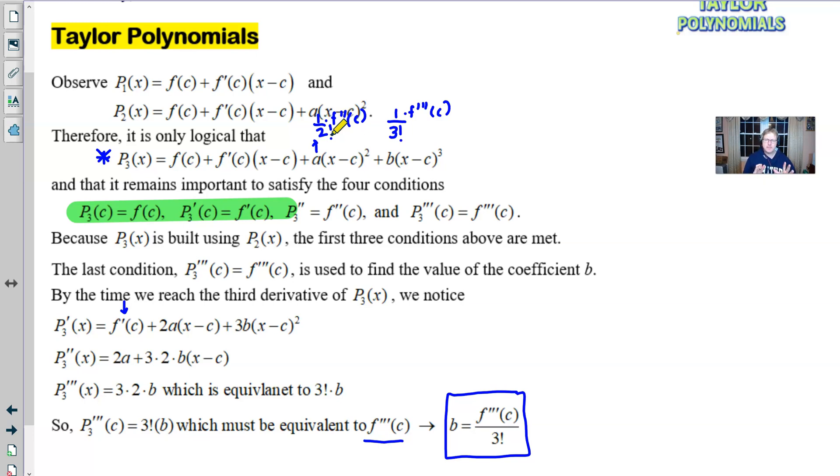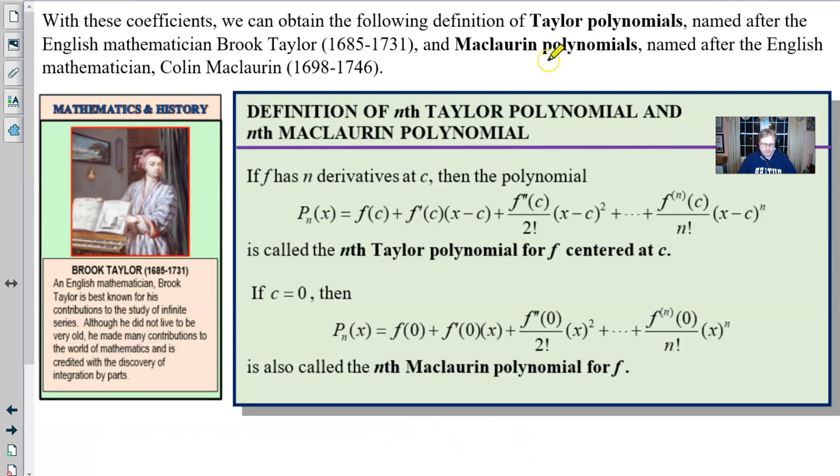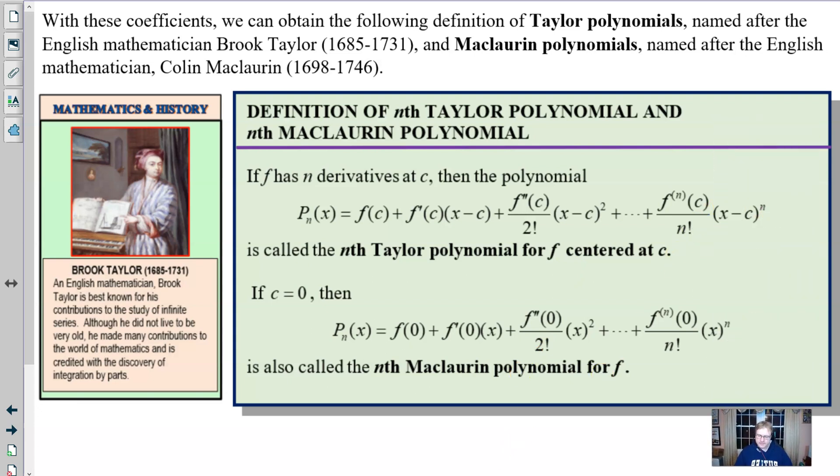And now something magical happens. The magic is about to happen because this is it. And with these coefficients, we can obtain the following definition of Taylor polynomials, named after the English mathematician Brooke Taylor, and Maclaurin polynomials, named after the English mathematician Colin Maclaurin. And so here is your definition.